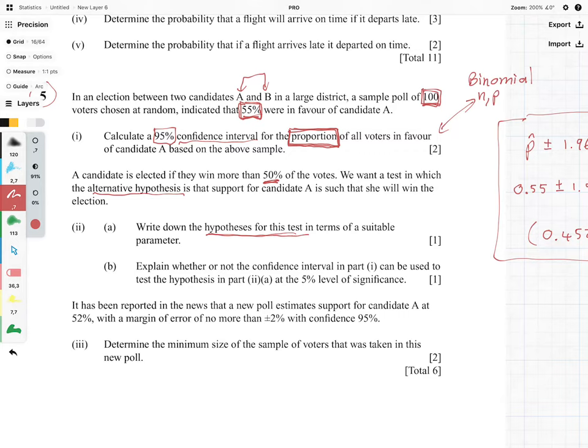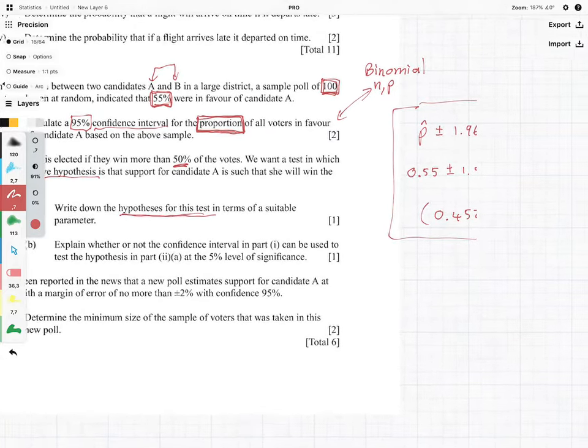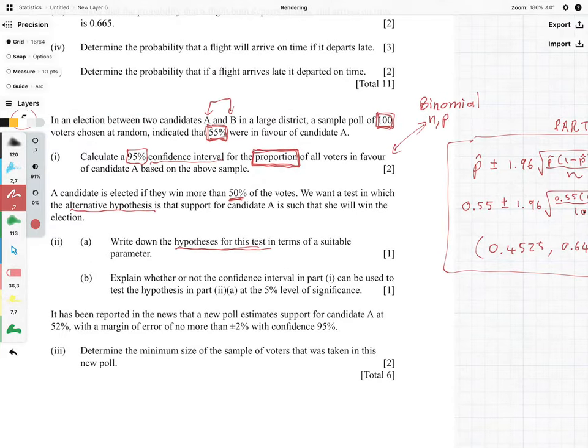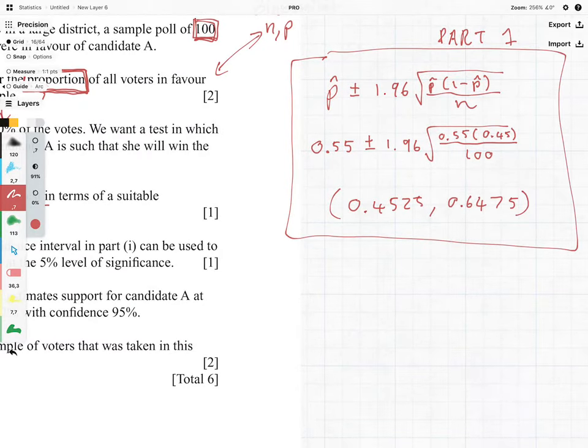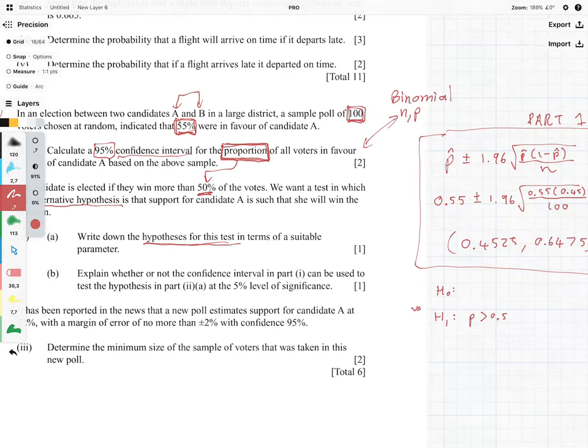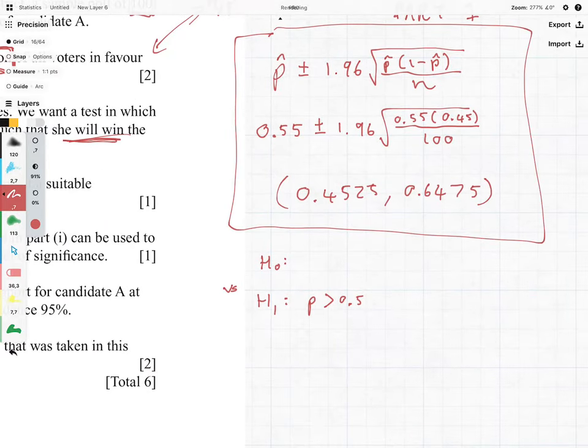So what we need to do here is we need to write the null and alternative hypothesis, and what we're doing here is that the P is the proportion. So this proportion here is linked to this 50 percent. So what we can have: we're going to have H0 as our null hypothesis versus H1 which is our alternative. We've been told that the alternative is P greater than 0.5 because that is them winning the election such that she will win, and that means that the null hypothesis is that P is going to be less than or equal to 0.5.